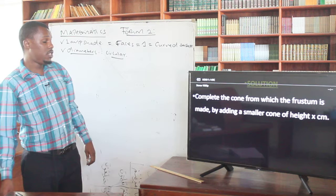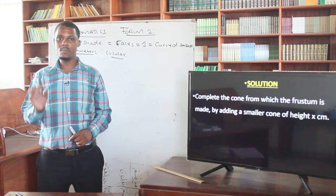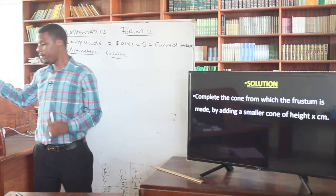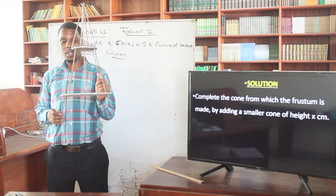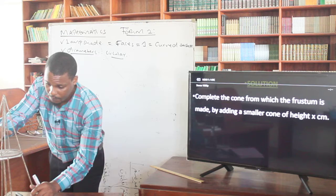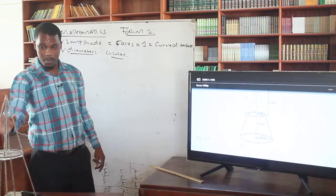Let's move to the solution. The first hint is to complete the cone from which the frustum is made by adding a smaller cone of height x. You pick your cone here, you pick your frustum there. Then you complete it by adding the small cone back to where it was. You extend using the dotted line — it is like extrapolating — so now you have the original complete cone.